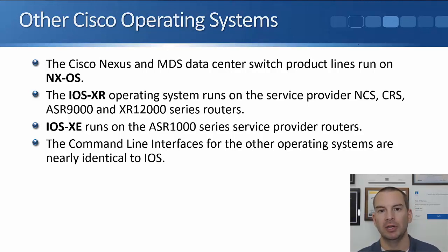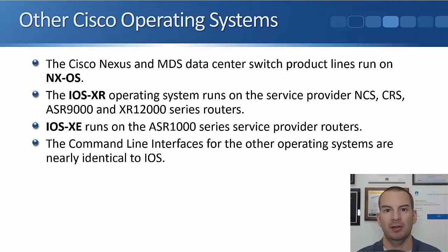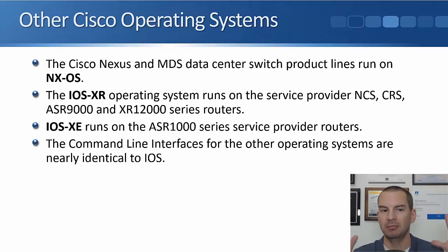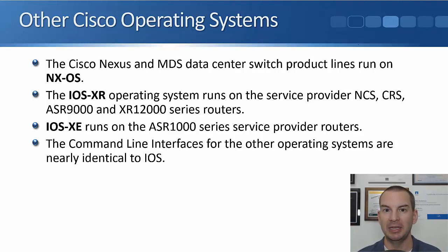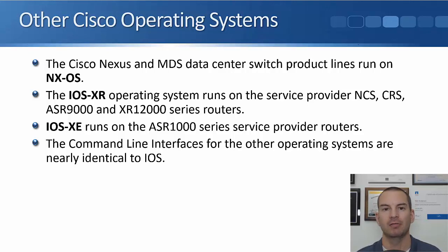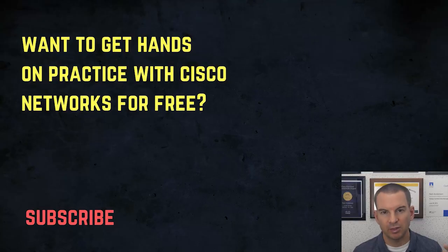These other operating systems are mainly found on the higher-end routers and switches, but enterprise-grade routers and switches are still running IOS. Don't think that IOS is a bad or unreliable operating system — it's been purpose-built by Cisco, the biggest networking company in the world, to run on enterprise-grade routers and switches, so it is very robust and still very reliable.